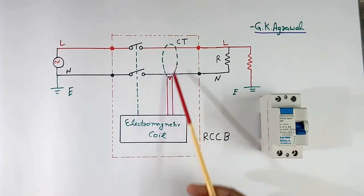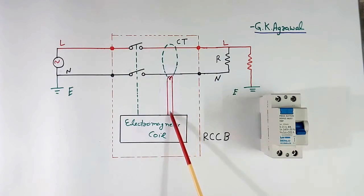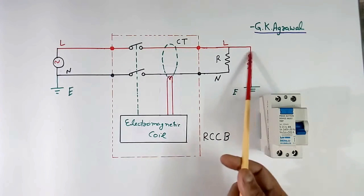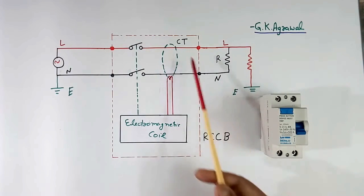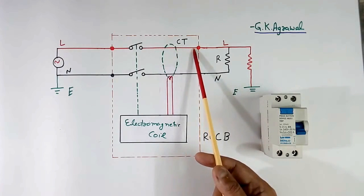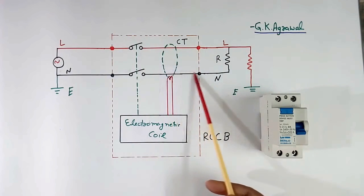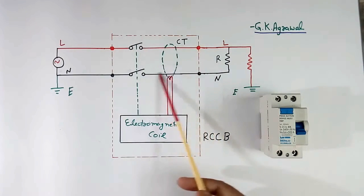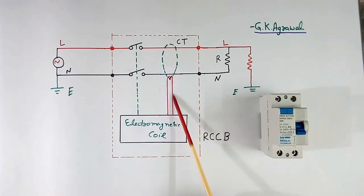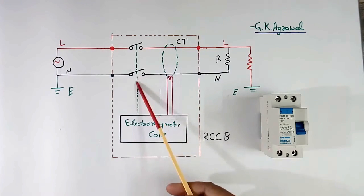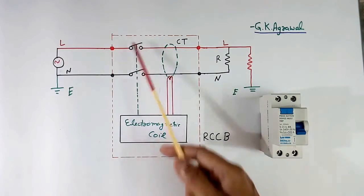No flux will flow in the CT core and secondary current will be 0. Now suppose when we connect a resistance or a human body is touching, then the line current and neutral current will not be equal. There will be net current in the primary, so in the secondary some current will flow. Because of that, this coil will operate and it will trip — it will open the switch.